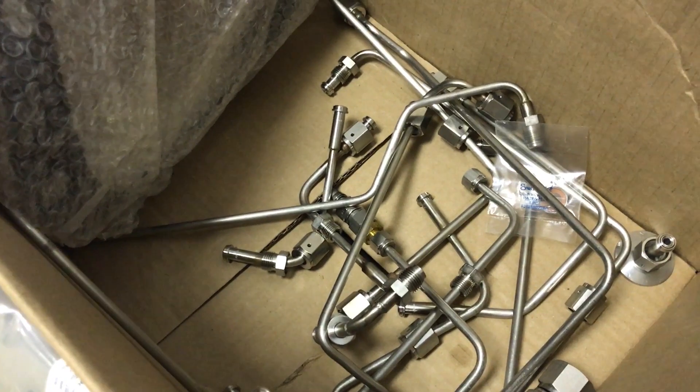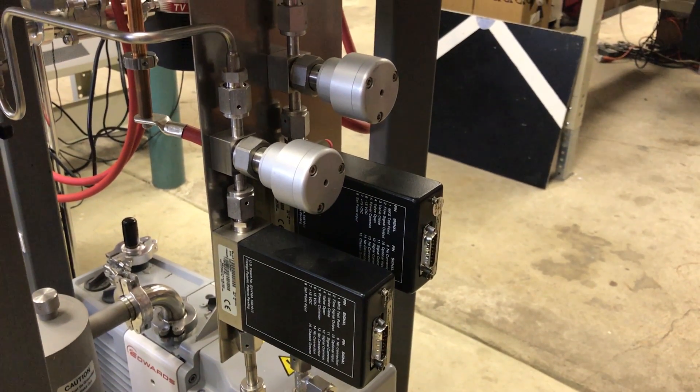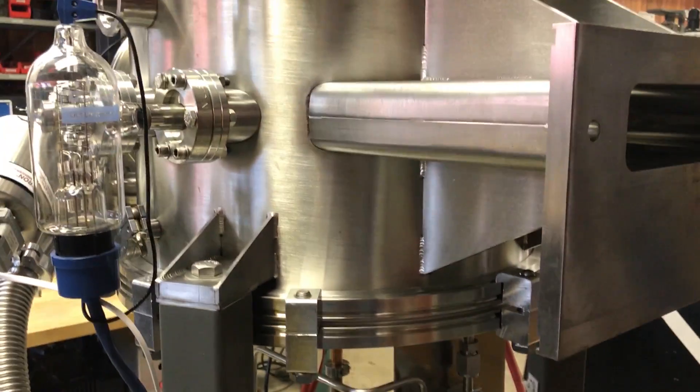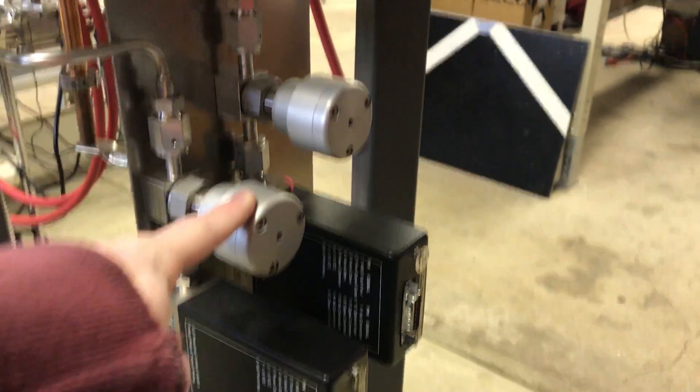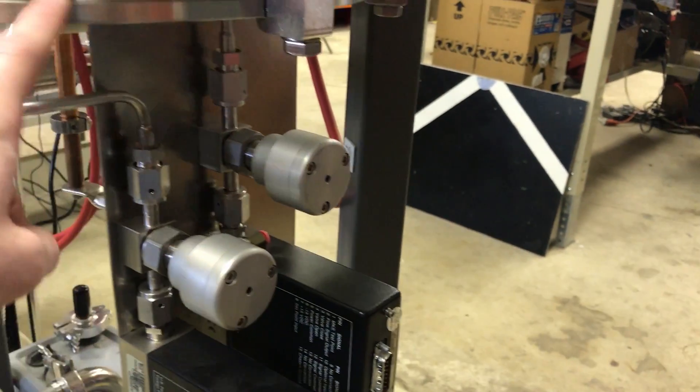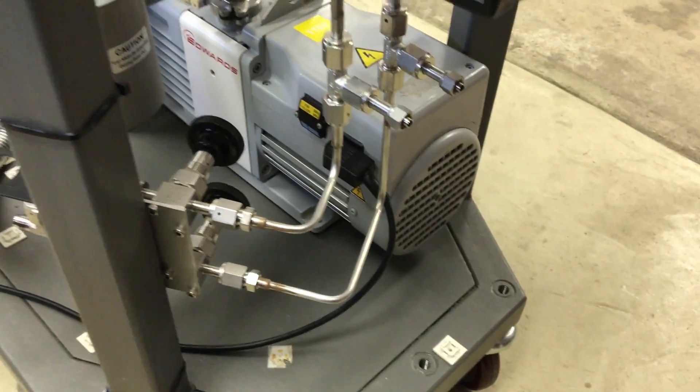So these are VCR. These are mass flow controllers, and these allow me to create atmospheres inside of this chamber after I pump it down a very precise amount of different gases. These are normally closed pneumatic valves, and then it goes up to the chamber. I have these, and everything's VCR after that.